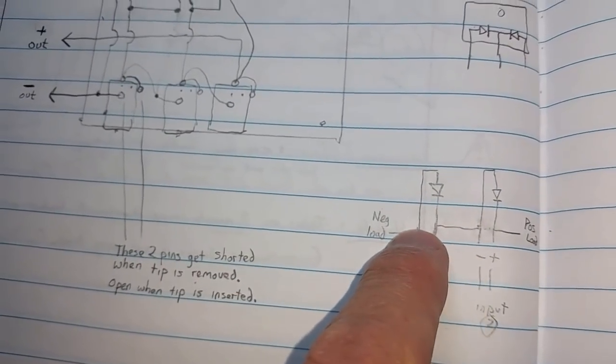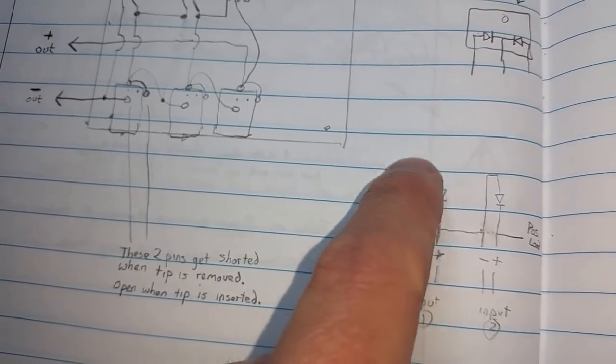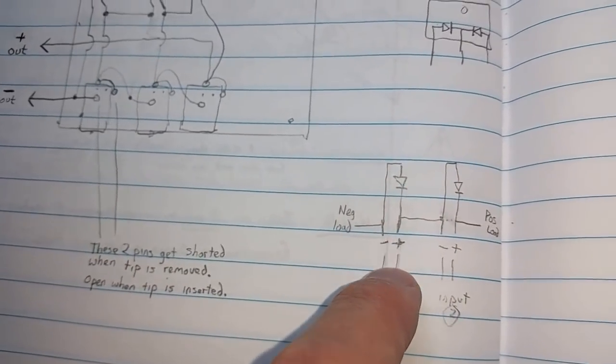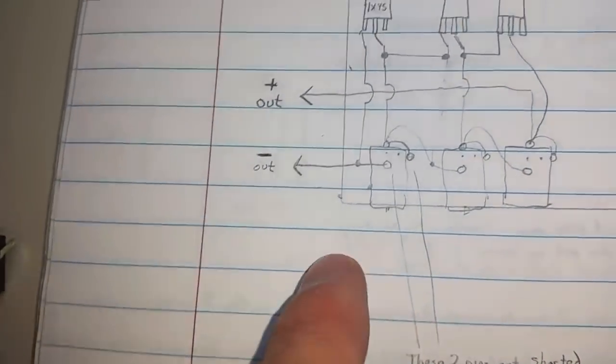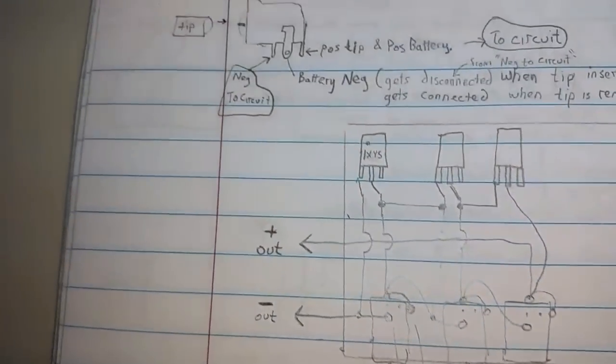That way the juice won't go through the black brick power adapter. It'll instead just flow right on through. And the other cool thing is if the jack is removed. Let me show you.